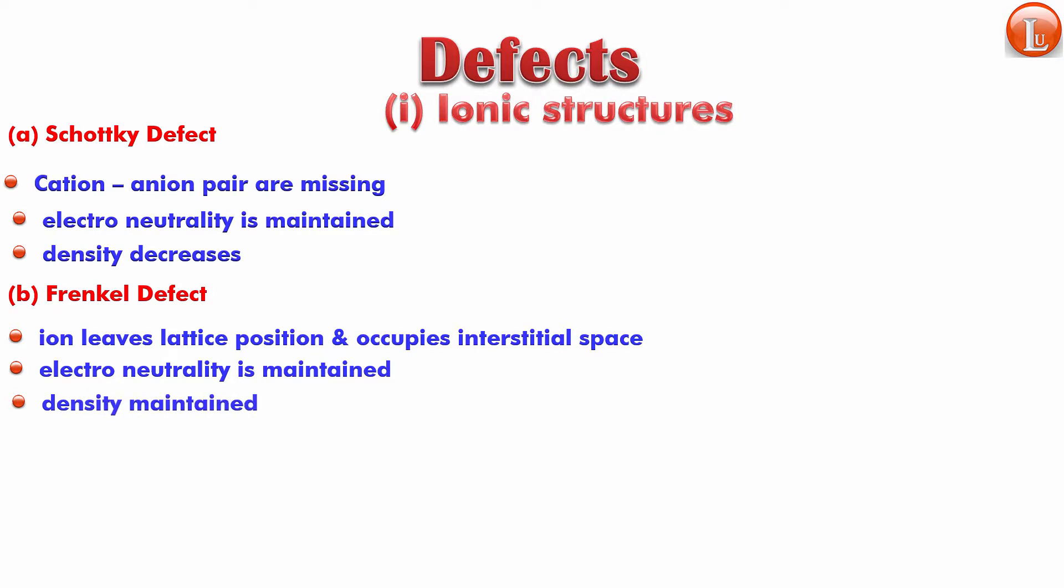Then comes substitutional impurity defect. This is very similar to substitutional impurity. For example, in most of the cases whenever barium is coming out in the form of a crystal, some amount of strontium is always there and vice versa. So sometimes in a strontium crystal barium replaces, and in barium crystal strontium replaces. Electroneutrality is maintained because the charges are same, but the density will definitely change.